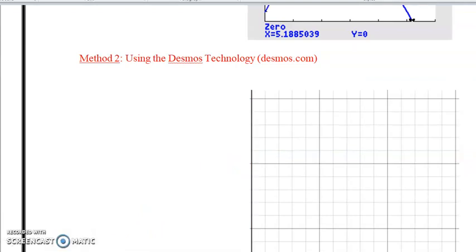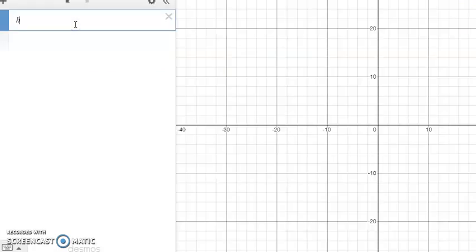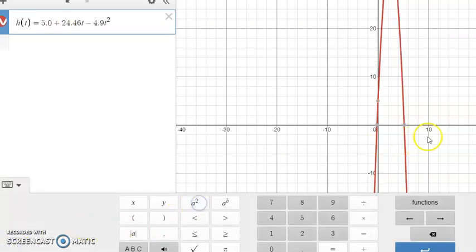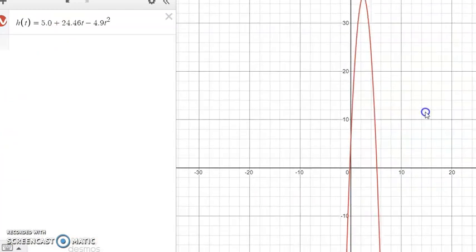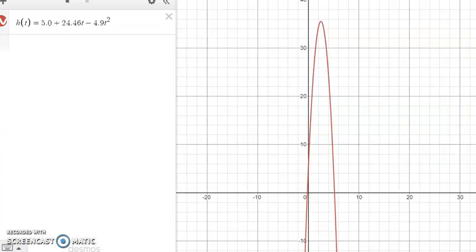So we open up our Desmos.com. You can literally write the function as in, you can use it as h(t). It's pretty neat. 5.0 plus 24.46t minus 4.9t squared. Okay. That's pretty neat. There's your graph. You just move it around.